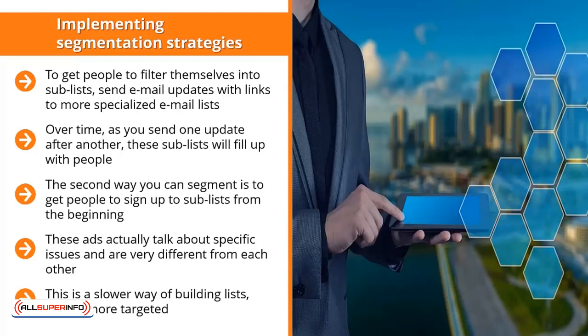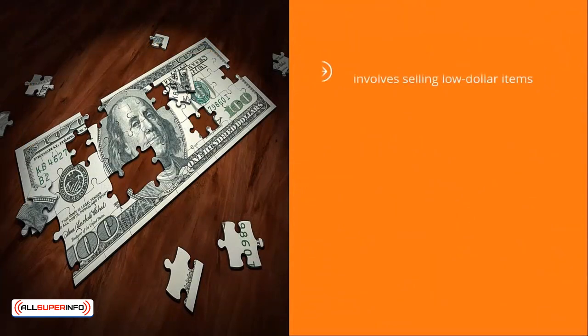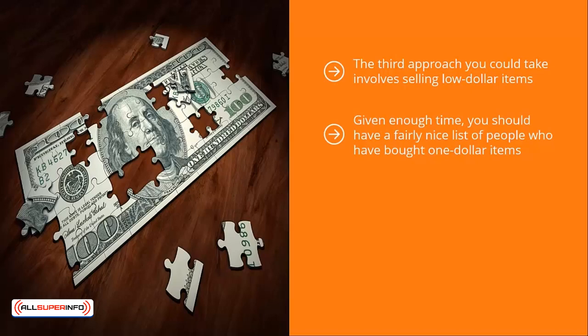With everything else being equal, the slow growth rate of your mailing lists can be offset by the higher sales conversions of people signing up to those specialized sub-lists. The third approach involves selling lower-dollar items. You start with your general list and send one update after another promoting a $1 product. When people buy these $1 items, they end up on your buyer's list. Behind the scenes, they are automatically unsubscribed from your main list. Given enough time, you should have a fairly nice list of people who have bought $1 items. You then focus most of your time crafting high-converting updates that target your buyer's list. This maximizes your return on effort.